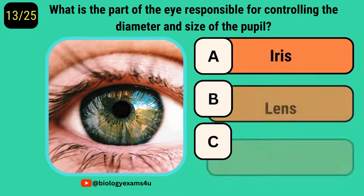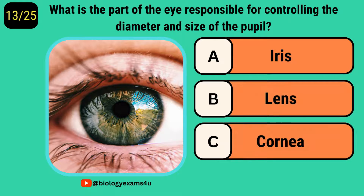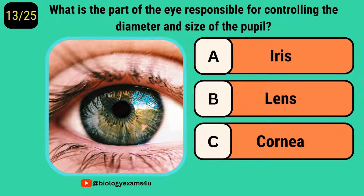What is the part of the eye responsible for controlling the diameter and size of the pupil? It is called the iris.